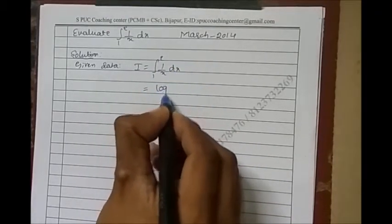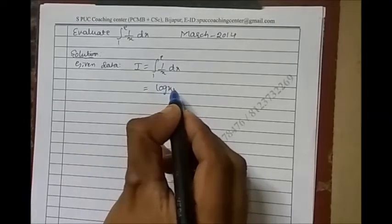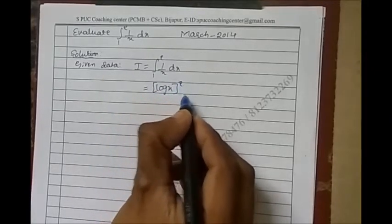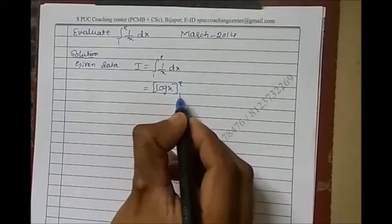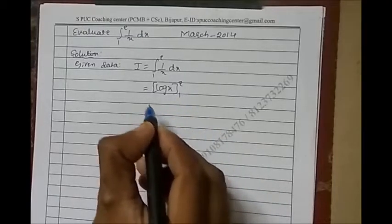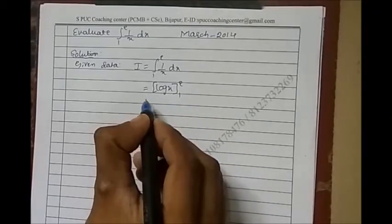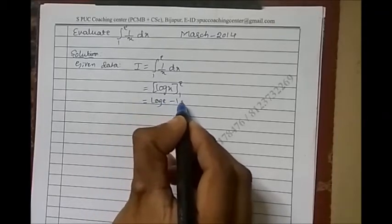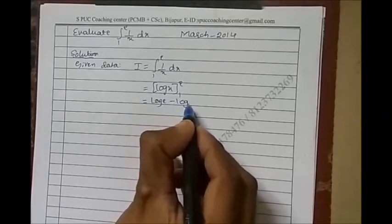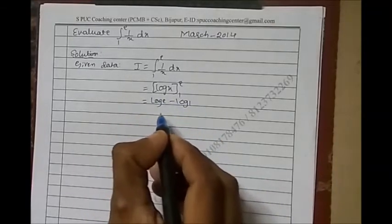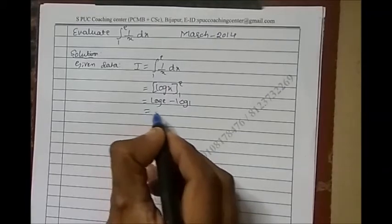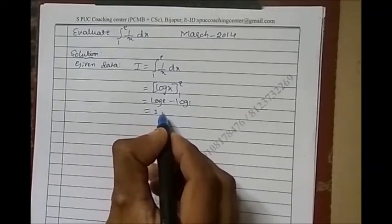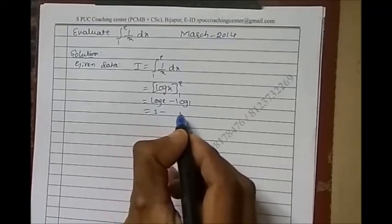The integration of 1/x is log x. The upper limit is e and the lower limit is 1. Substituting the upper and lower limits, it becomes log e minus log 1.